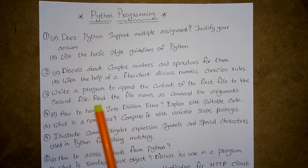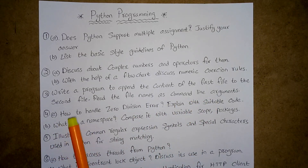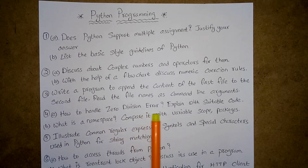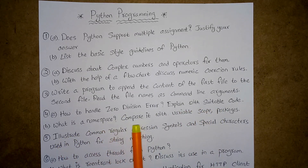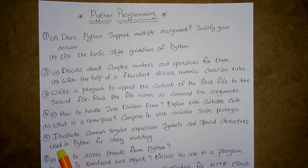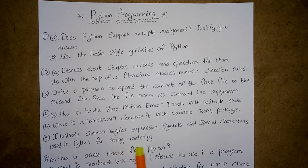Third question: Write a program to append the content of the first file to the second file; read the file names as command line arguments. Fourth question: (a) How to handle zero division error — explain with suitable code. (b) What is the namespace? Compare it with variable scope and packages. Fifth question: Illustrate common regular expression symbols and special characters used in Python for string matching.